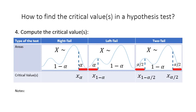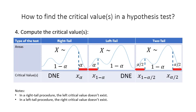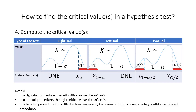Finally, we compute the critical values. It's worth noting that in a right-tailed procedure the left critical value doesn't exist, and in a left-tailed procedure the right critical value doesn't exist. Also, the critical values in a two-tailed procedure are exactly the same as the critical values in a corresponding confidence interval procedure.